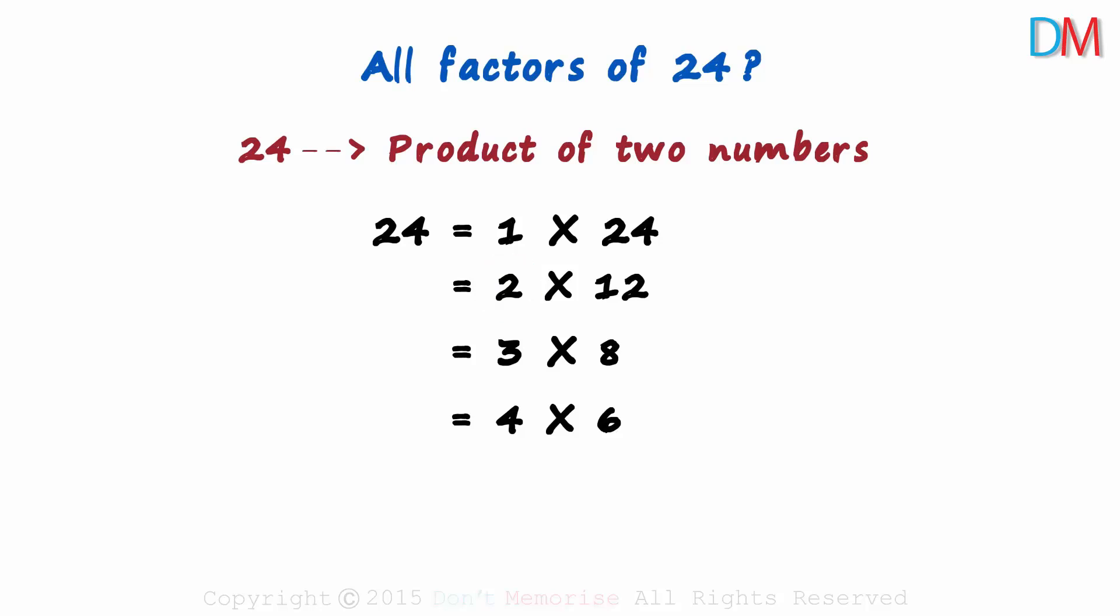If yes, we write the product as we have written it here. Then we move on to the next natural number 3. Is 24 divisible by 3? Yes, so we write the product here.